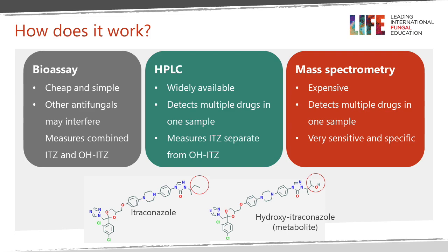There are three broad approaches to measuring drug levels in plasma or serum. The first is a bioassay methodology, which is cheap and simple to run, though you need the relevant bioassay organisms and a standard curve for the drug of interest. If you have dual antifungal therapy, the other antifungal can interfere with results, but this is not true for amphotericin, which diffuses poorly in agar.